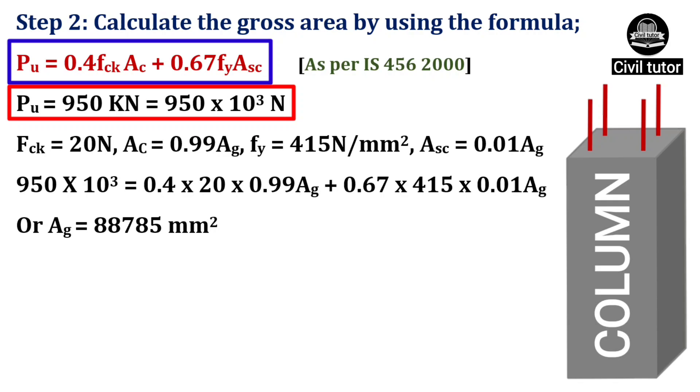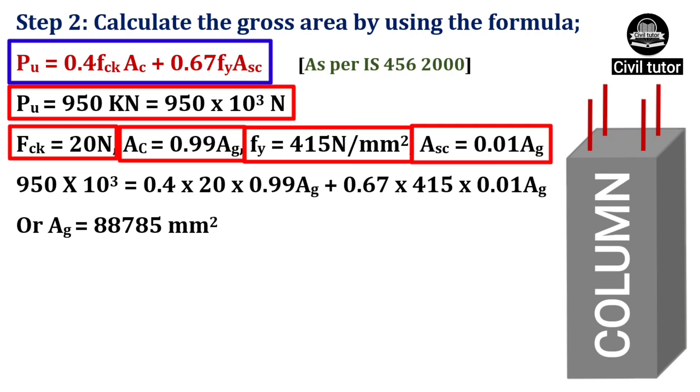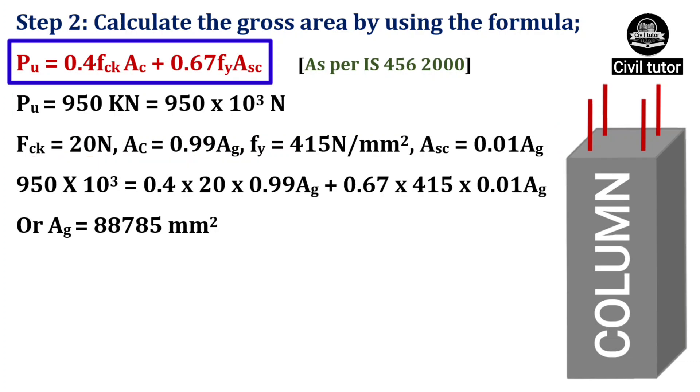FCK is the characteristic compressive strength of concrete. As we know, for M20 grade of concrete, FCK will be 20 N. The area of concrete, that is AC is already calculated as 0.99 AG. FY for FE415 will be equal to 415 N per mm square. The area of steel is 0.01 AG. On substituting these values, AG will be calculated as 88,785 mm square.